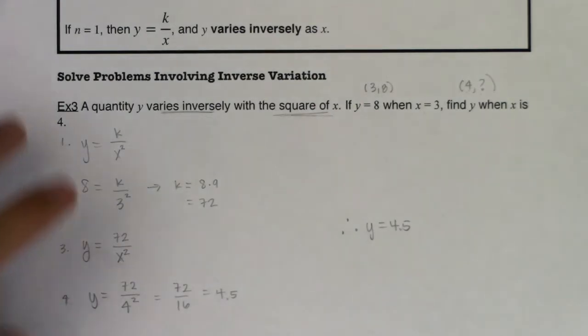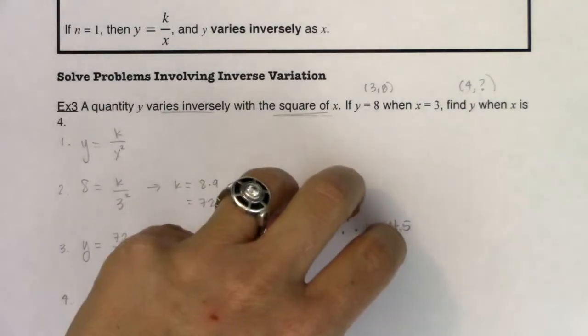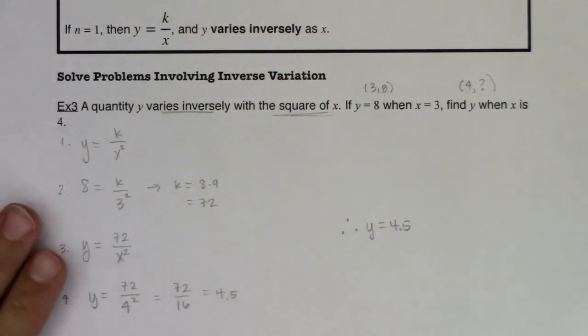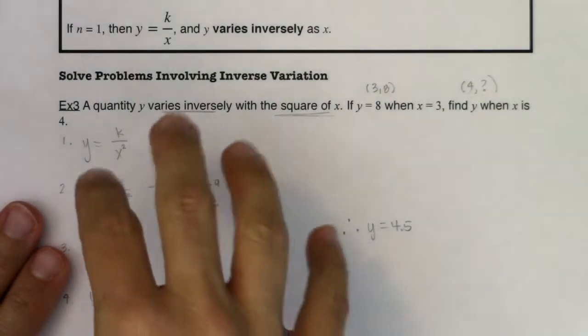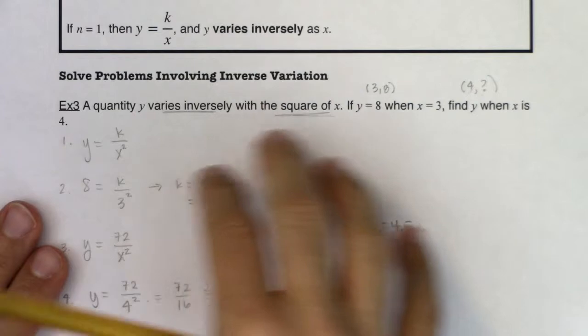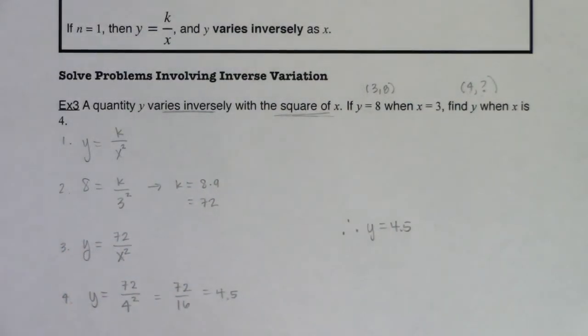So with that, now that we've got direct variation and inverse variation under our belt, we're going to bump up to joint variation. And that's going to be where we start combining a couple of directs, maybe a couple of inverses, maybe an inverse and a direct. It just really depends on the wording of the problem. Okay, I'll see you in a bit. Bye.